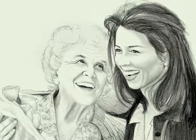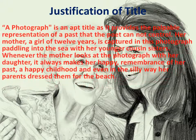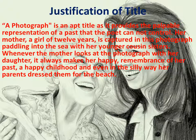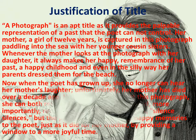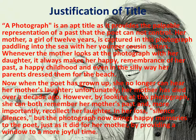'A Photograph' is an apt title as it provides the palpable representation of a past that the poet cannot control. Her mother, a girl of 12, is captured in this photograph paddling into the sea with her younger cousin sisters. Whenever the mother looked at the photograph with her daughter, it brought happy remembrance of her past — a happy childhood and the silly way her parents dressed them for the beach. When the poet grew up, she could no longer hear her mother's laughter, as her mother had died over a decade ago. However, by looking at the photograph, she can remember her mother's past and recollect her laughter in loss — the photograph brings happy memories, providing a window to a more joyful time.